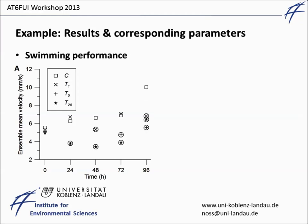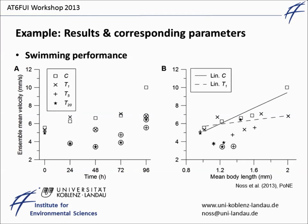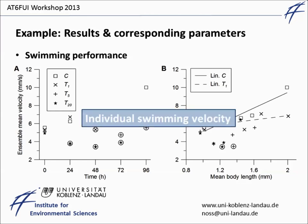A third difference had been noticed in the swimming performance, that means the mean swimming velocity. Although one can directly see that treated animals were slower, one might criticize that this could be a pure size effect because treated Daphnia were smaller. However, velocities were significantly slower even in size-corrected plots. This difference was obtained from the observation of the swimming velocity of individuals.